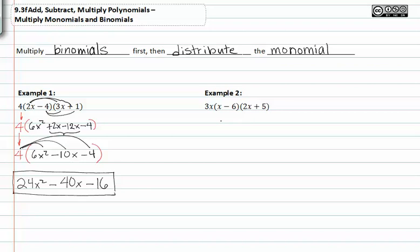In example two, we have 3x out front. Again, it's very important to keep that 3x with you at all times until you've distributed it through. So we're going to go ahead and FOIL and then distribute the 3x.